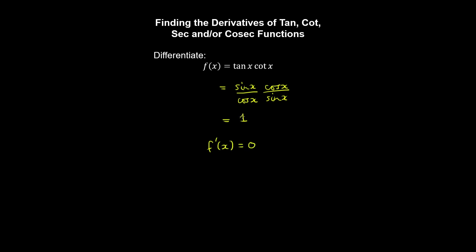So you've got to picture this as 1 by x to the 0, and using the power rule, the derivative of this evaluates to 0.